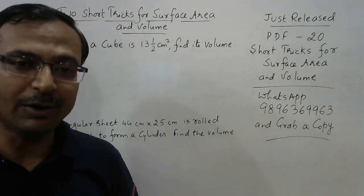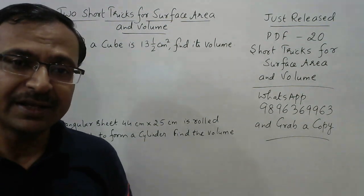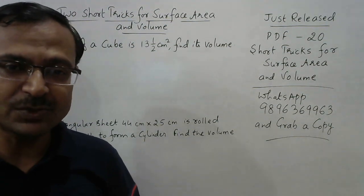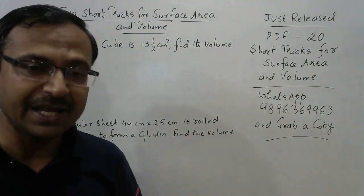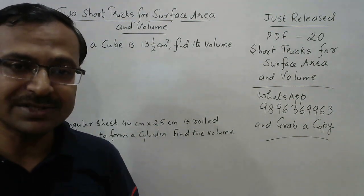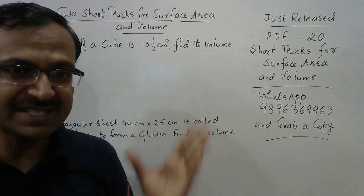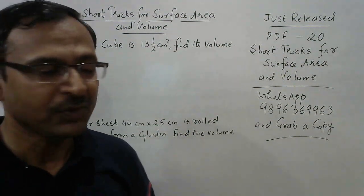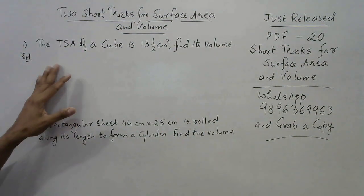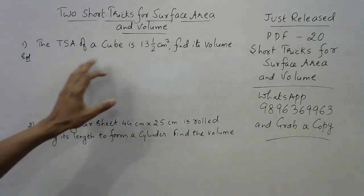To demonstrate the strength of these tricks mentioned in PDF number 20, I decided to take up two questions. These two questions will be solved through short tricks only. Let's see the first one: the total surface area of a cube is 13 and a half centimeter square, and you need to find the volume.